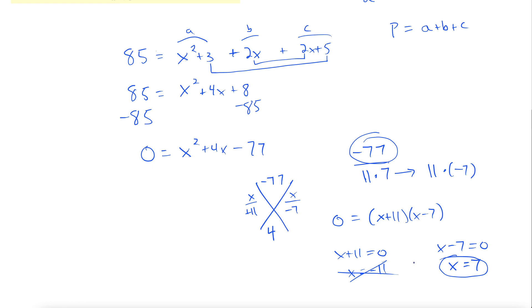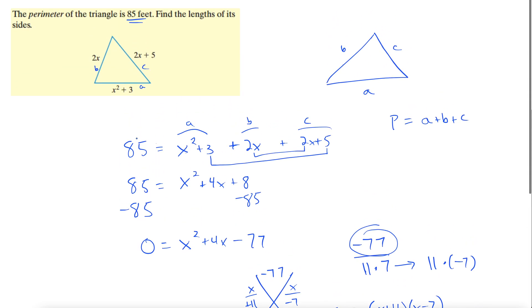But that is not our answer yet. Don't stop there. Let's go back up to the top and see what we actually needed: find the lengths of its sides. x is not the length of the side. We have x equals 7, that's true, but that's not the length of the side.